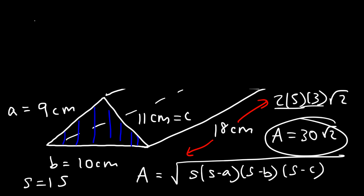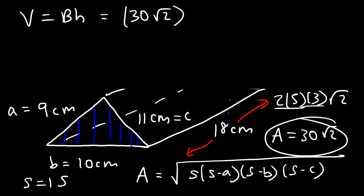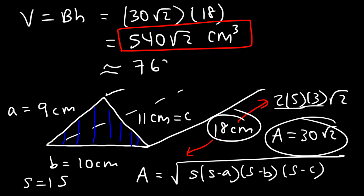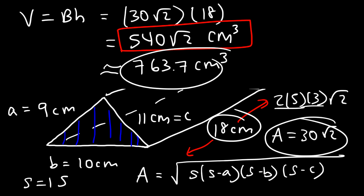So now we can calculate the volume of the prism. It's base times height: the area of the base is 30 square root of 2, and the height of the prism is 18. So 30 times 18 is 540. The answer is 540 square root of 2 cubic centimeters, or approximately 763.7 cubic centimeters.